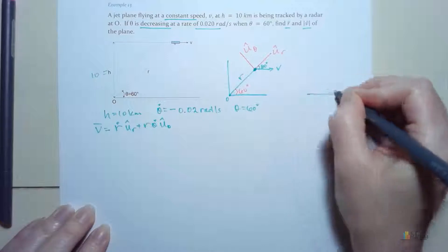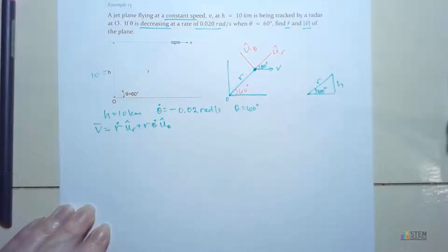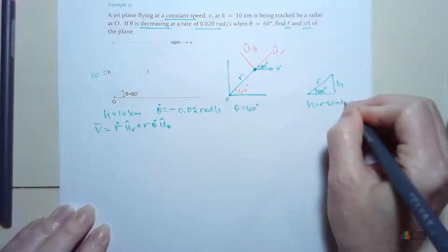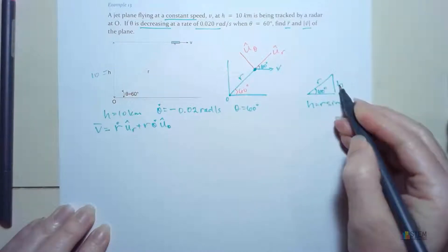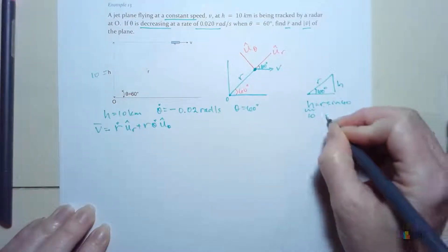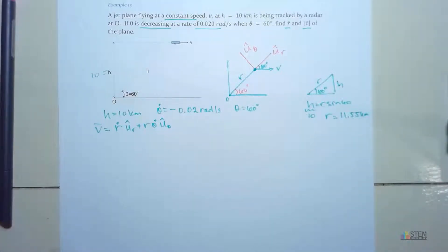So I can find R pretty easily just using a right triangle. So if you want, let's just draw it out this way. So here is the 60, here's R, and then that distance is H. So from that, if we write it out, we know H has to be R sine theta, because that's opposite, and then we know H is 10, so when you plug that in, you can find R. And R is 11.55 kilometers. So now I've got this.